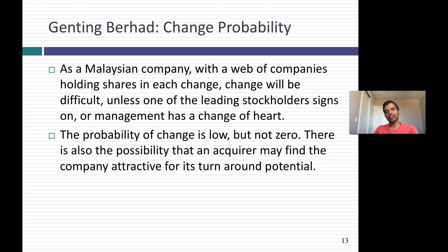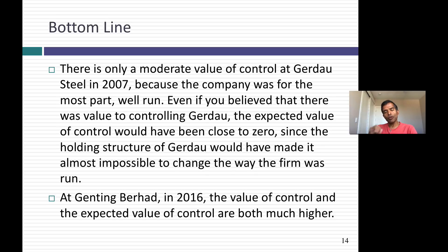You can already see why corporate governance affects the expected value of control. The expected value of control in markets where change is possible and corporate governance is strong will be greater than in markets where that change is not likely. In summary, the value of control is not 15, 20, or 25 percent as some rule of thumb — it has to be estimated by valuing the company first with the status quo, then making reasonable judgments on what the company can change to be run better and valuing it with those changes put in. The difference is the value of control, and as a final step, attach a probability to control changing and you've got an expected value of control. This is an interesting way to think about how much you should pay as a premium on an acquisition and what the value of a voting share should be relative to non-voting shares, because those are all driven by the expected value of control. Thank you very much for listening.